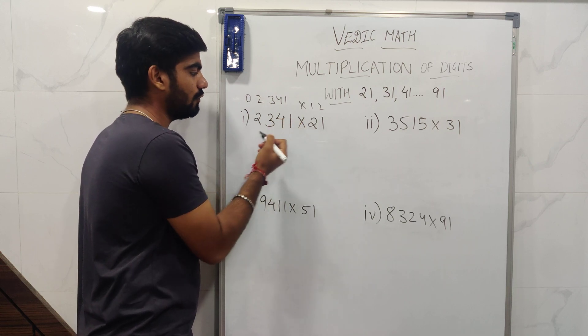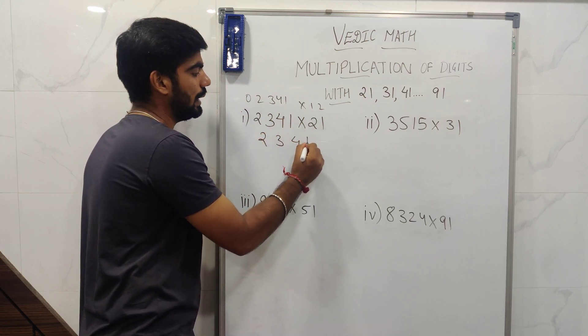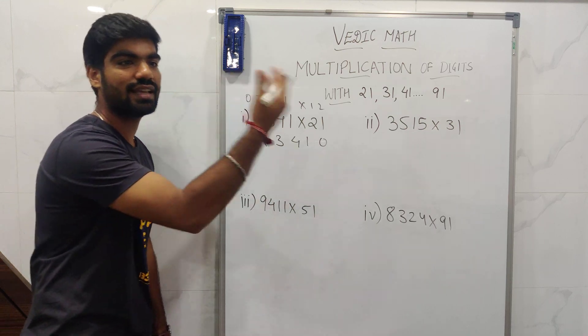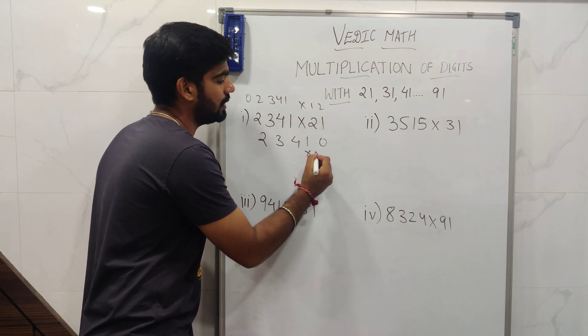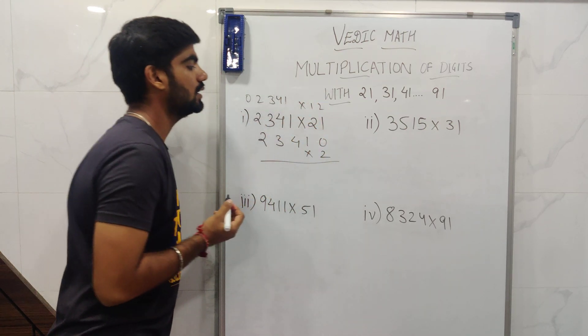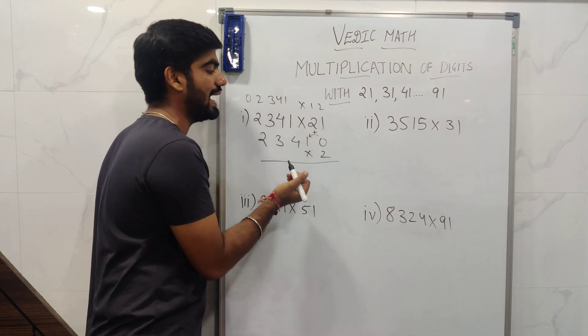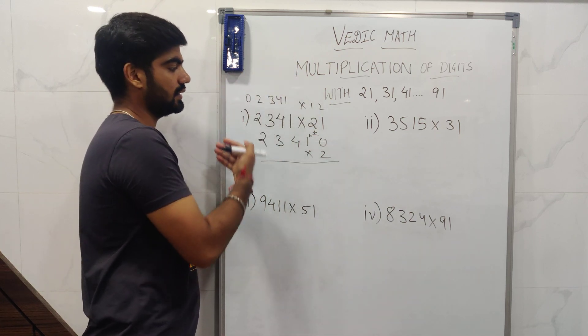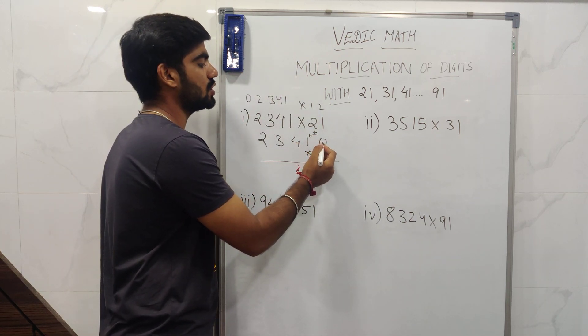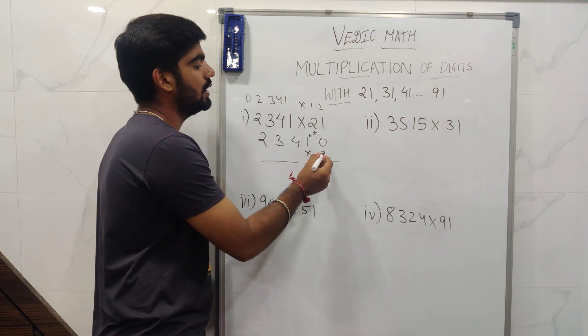So for 21, what we need to do is 2, 3, 4, 1, 0 - we need to add 0 at the end and then multiply it by 2. So here, 2 into 0 is 0, plus 1 we need to add the next one, so 0 plus 1 is 1. 2 into 1 is 2, 2 plus 4 is 6.